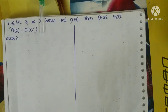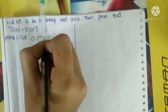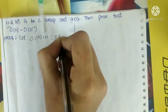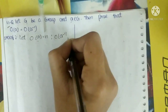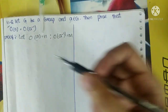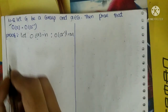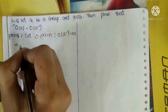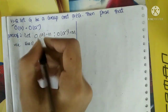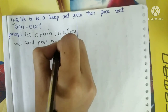So we will prove this as follows. First, let O(A) = N and O(A⁻¹) = M. So we assign O(A) as N and O(A⁻¹) as M. After setting this up, what we have to prove — we shall prove N is equal to M.